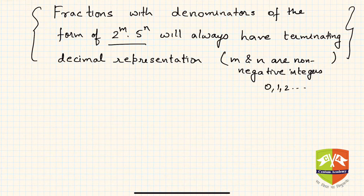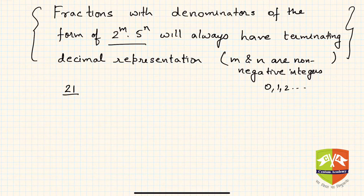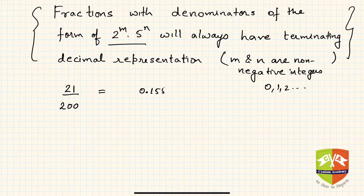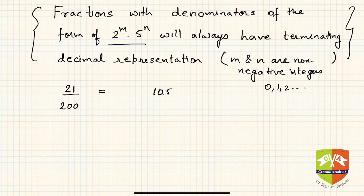Let us take an example to explain this. Let's say we have 21 upon 200. Let us find its decimal representation. If you divide 21 by 2 you get 10.5, and since there are two zeros in 200, it becomes 10.5 divided by 100.